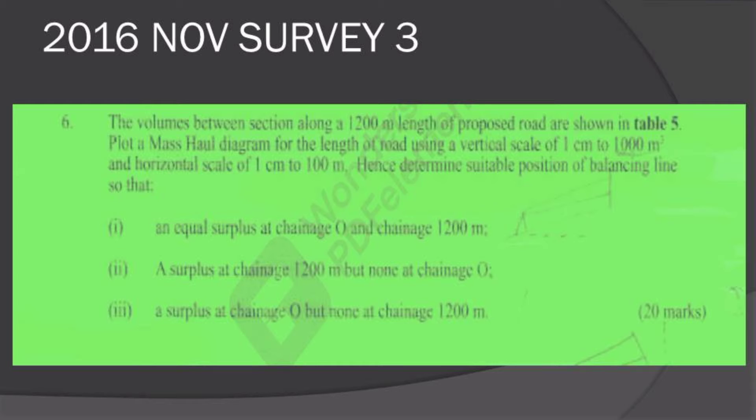Hence determine suitable position of balancing line so that: (i) unequal surplus of change 0 and change 1200 meters, (ii) a surplus at change 1200 meters but none at change 0, (iii) a surplus at change 0 but none at change 1200 meters.